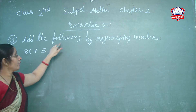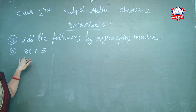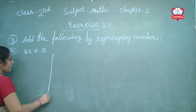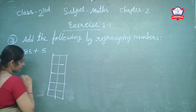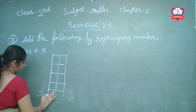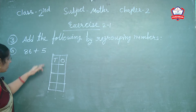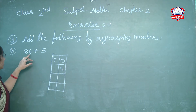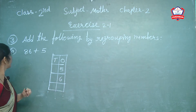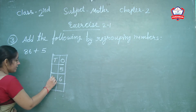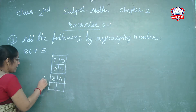Add the following by grouping numbers. The numbers given, we write them in groups and add. First draw the column — tens and ones. The first digit is 5. Next, 8 is tens and 6 is ones. So write 8 in the tens column and write 0 in ones. Write the plus symbol.